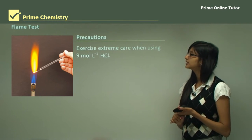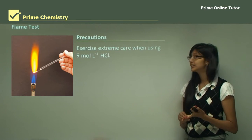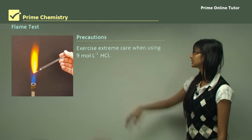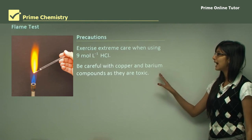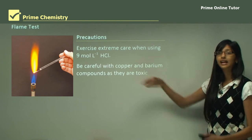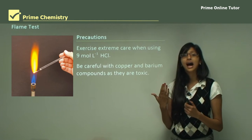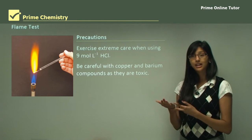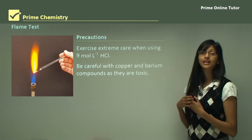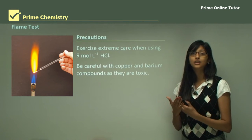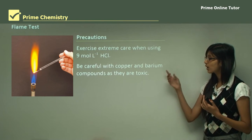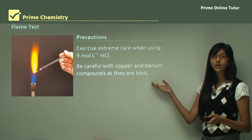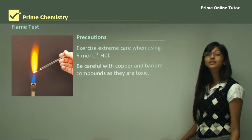There are some precautions you need to know before performing this investigation. First, be very careful because you are using concentrated hydrochloric acid at 9 mol/L, which is very concentrated. You also need to be careful with copper and barium compounds as they are toxic. Hydrochloric acid can burn your skin and cause irritation to your eyes and respiratory system, so you must wear proper gloves, goggles, and safety glasses throughout the experiment.